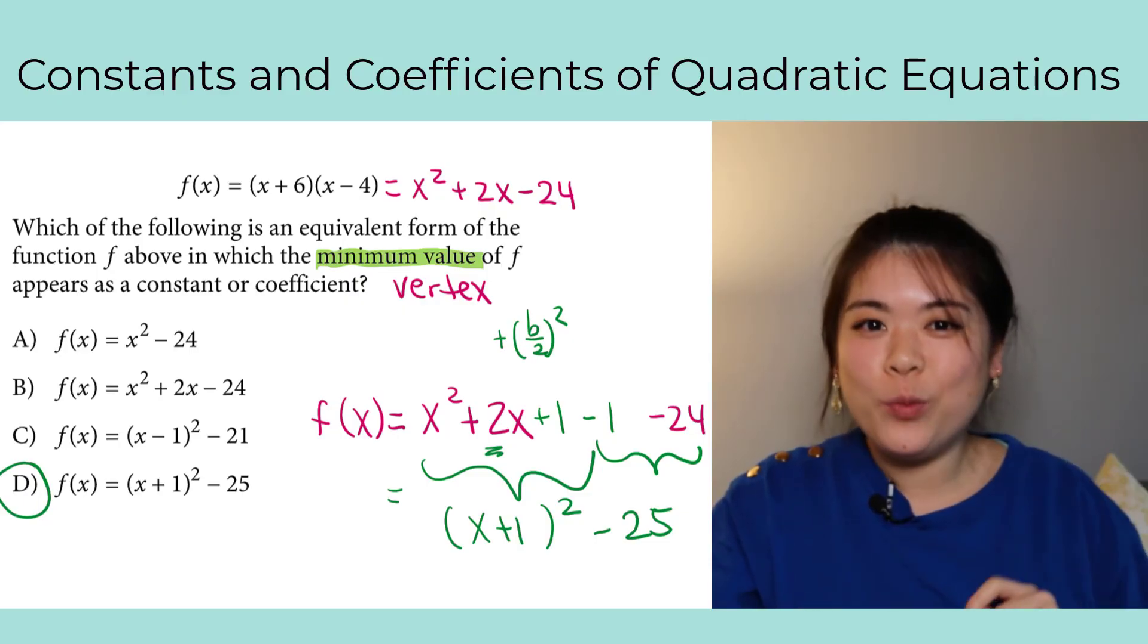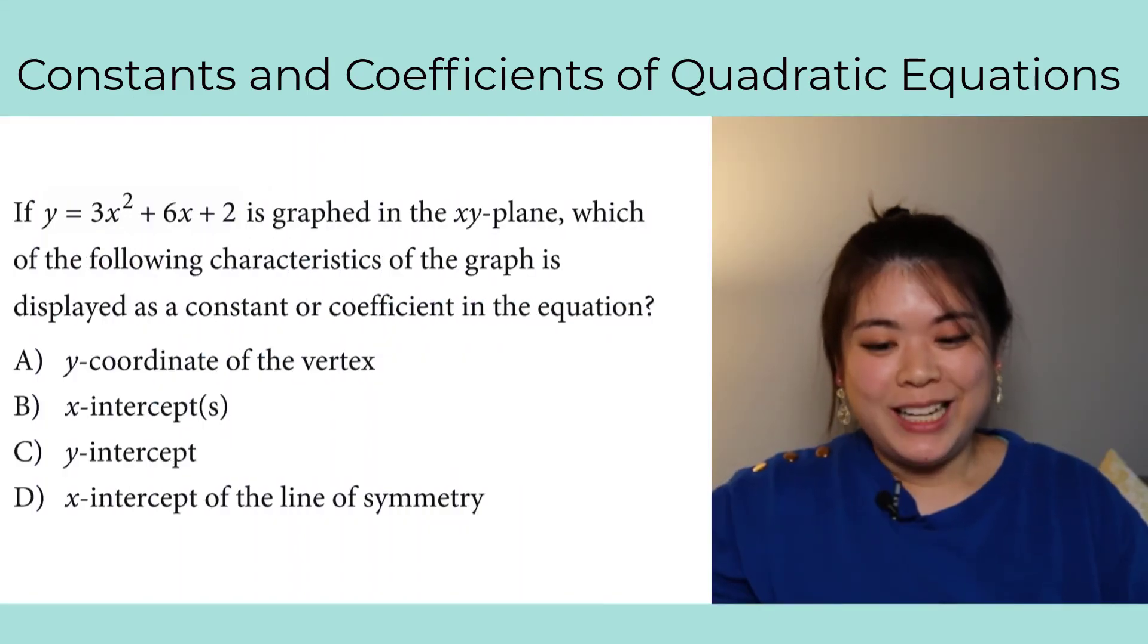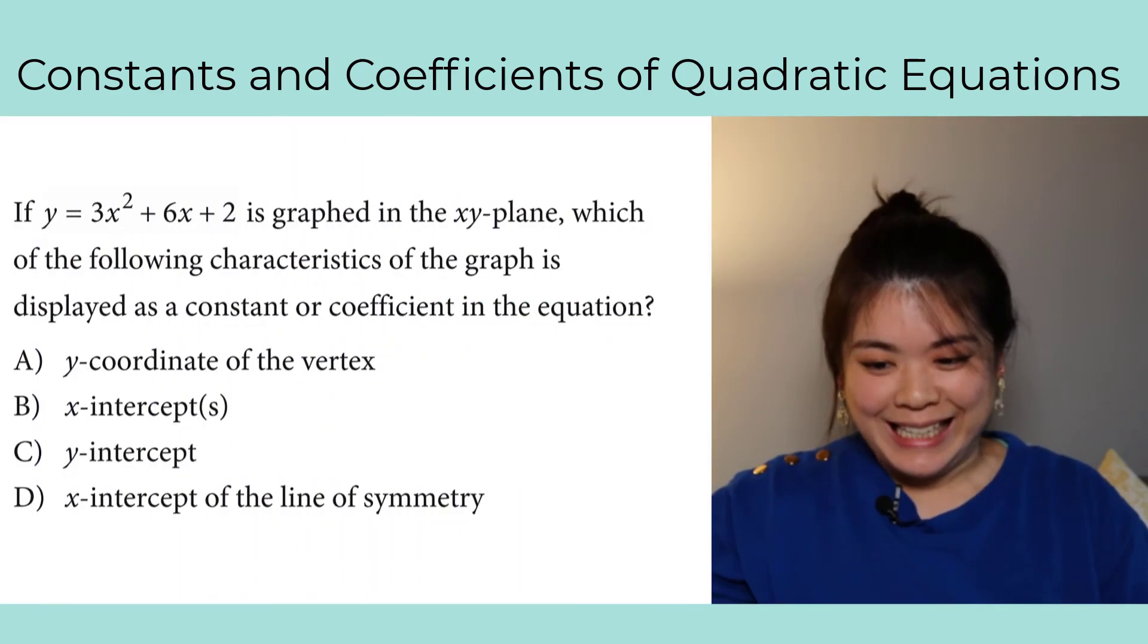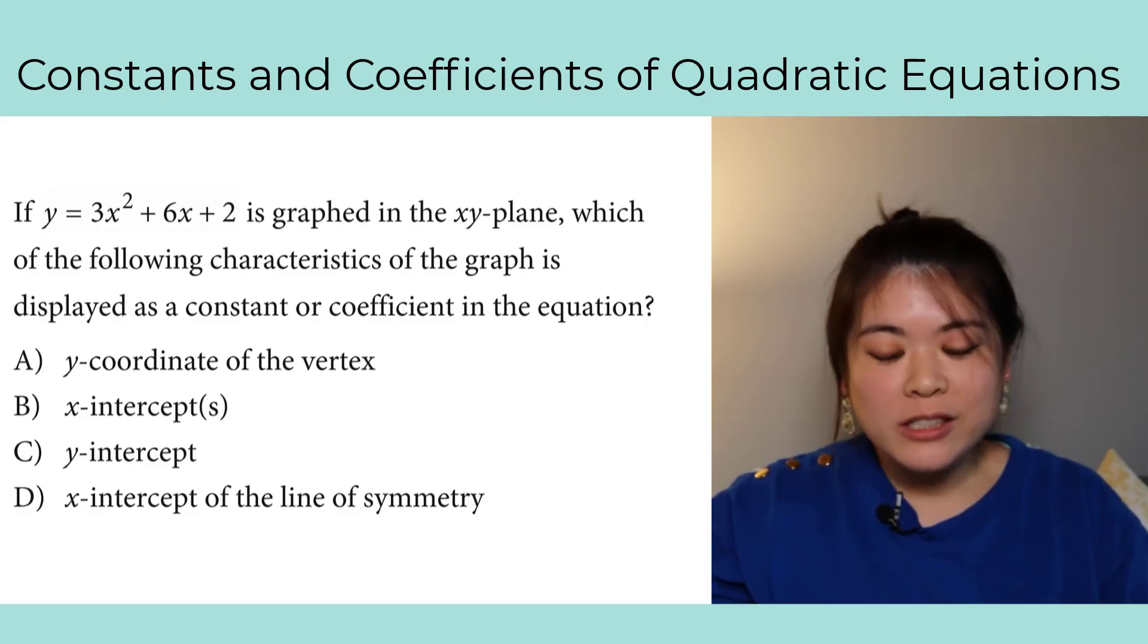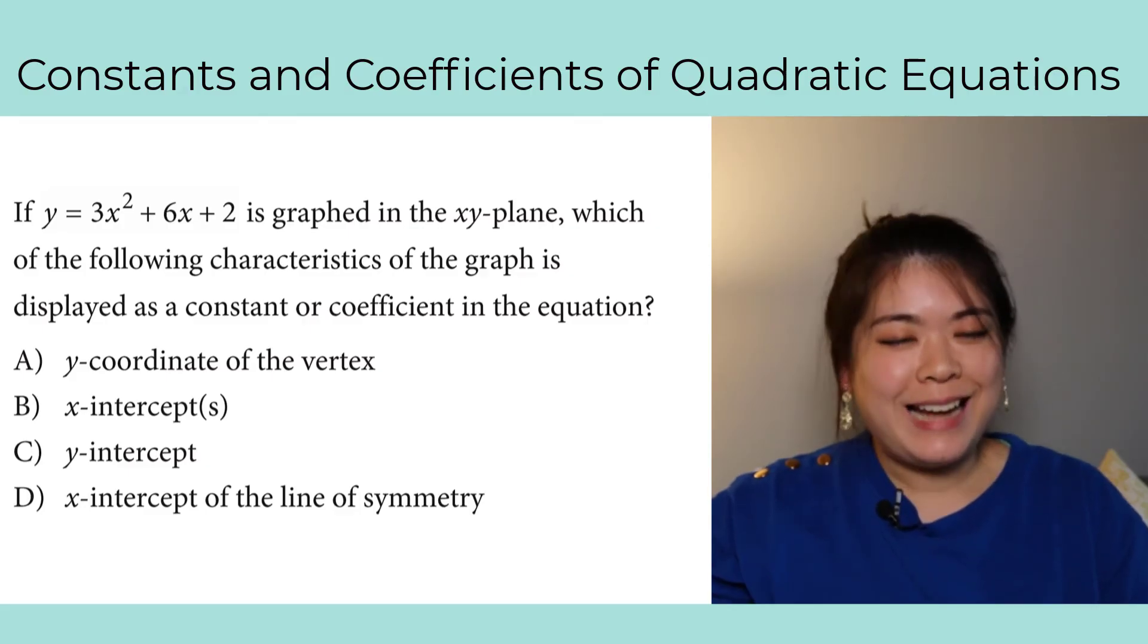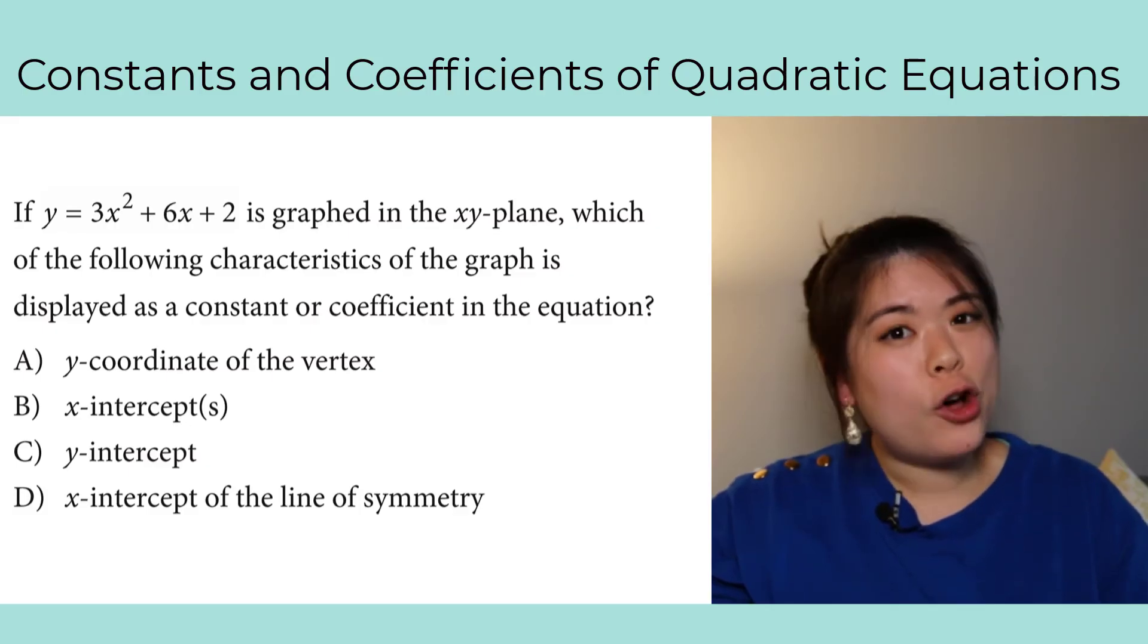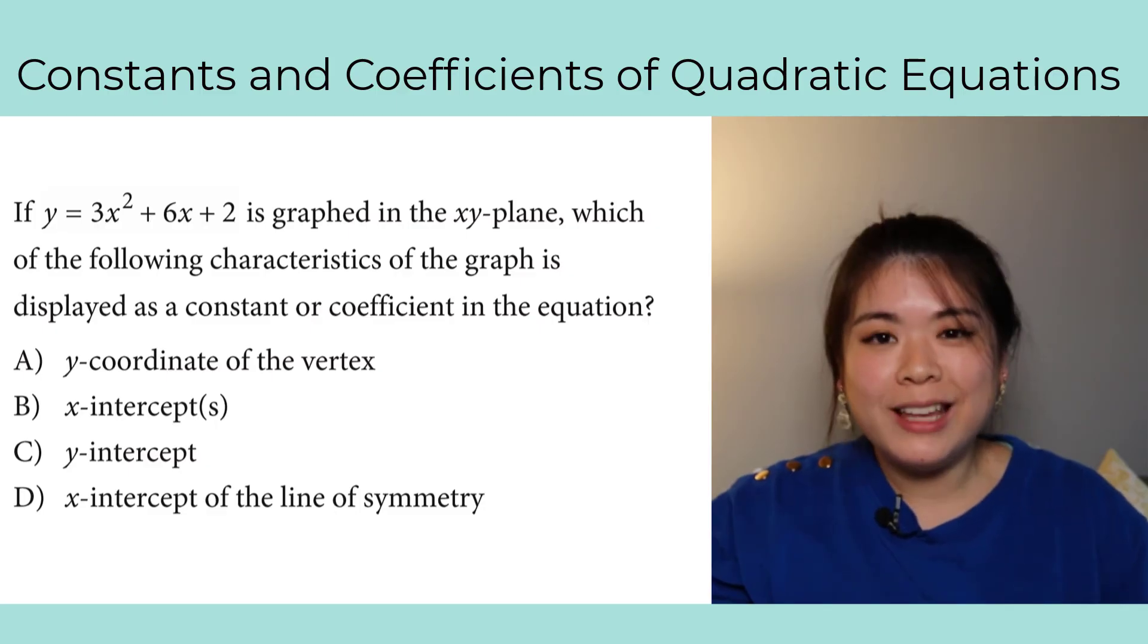All right, let's do one more together. If y equals 3x squared plus 6x plus 2 is graphed in the xy-plane, which of the following characteristics of the graph is displayed as a constant or coefficient in the equation? Now I did tell you when I was going through these, I wanted to pick examples that showed you all the different flavors these questions can come in.